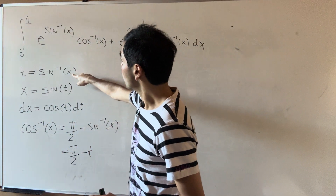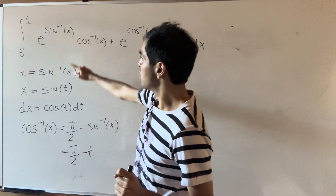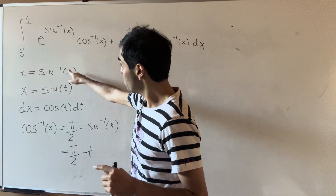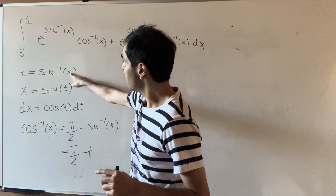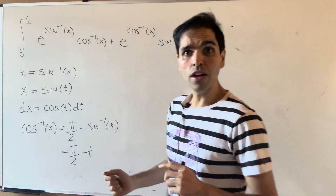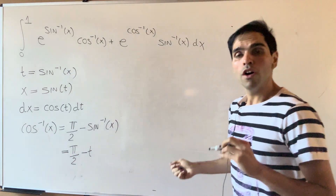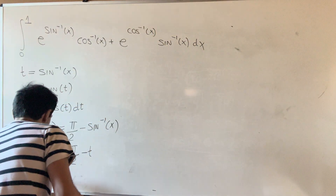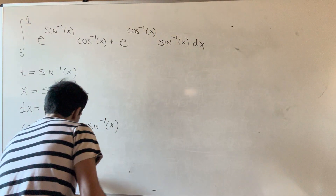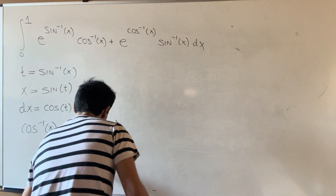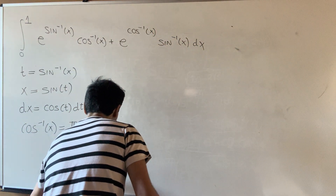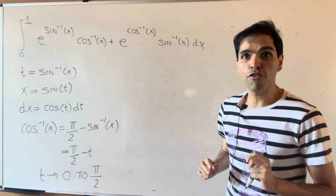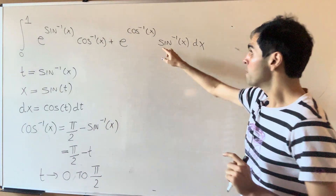And finally, if x goes between 0 and 1, t goes between arcsin(0) to arcsin(1), so from 0 to π/2. That'll transform our first integral.